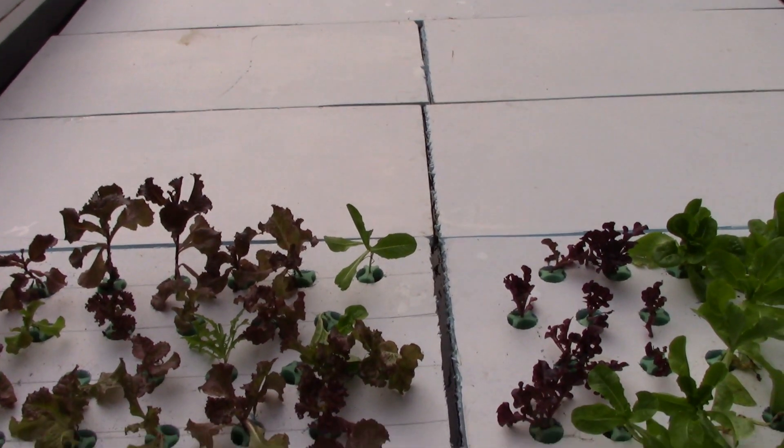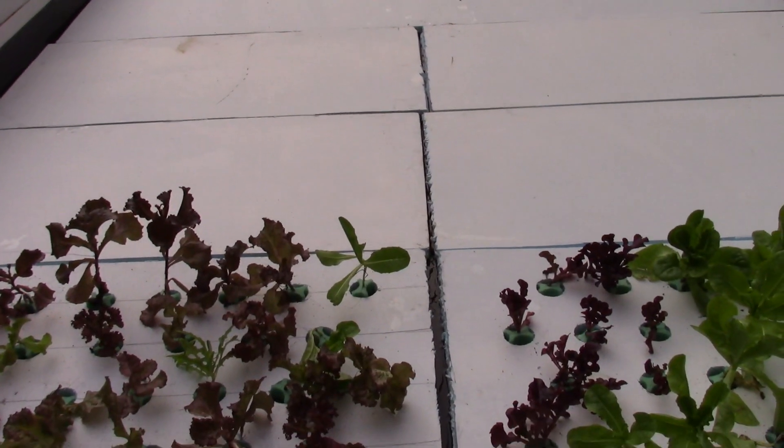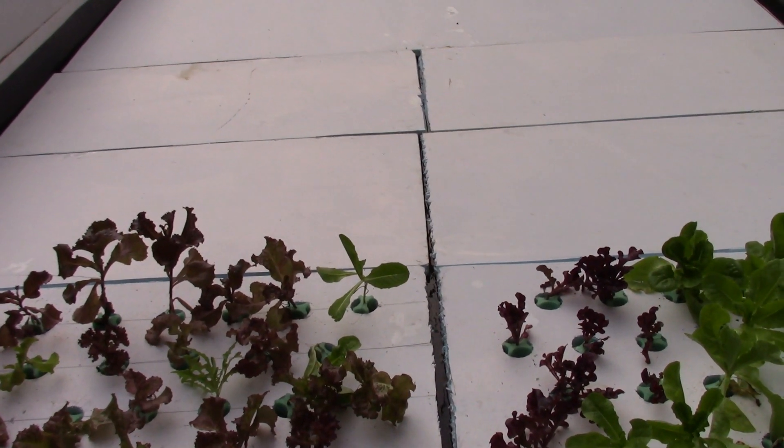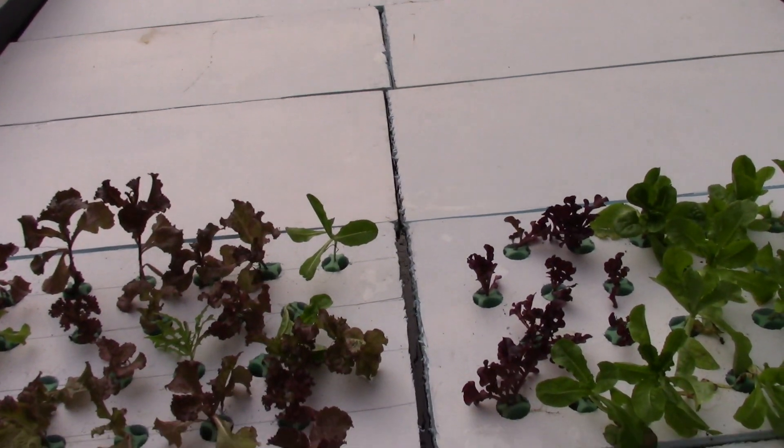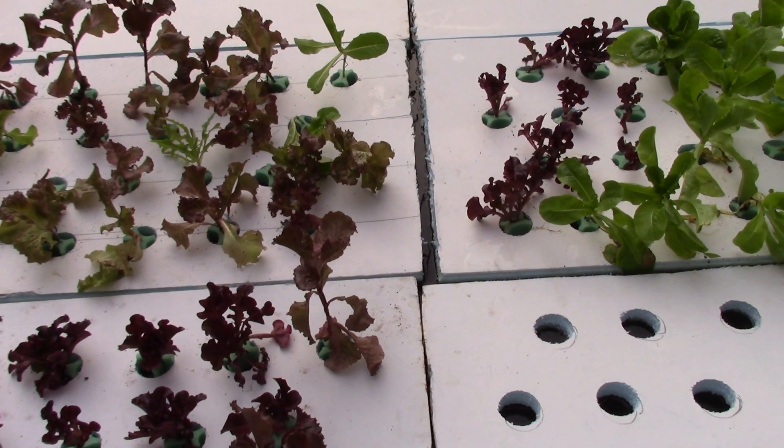In an aquaponics system, you have the fish in those tanks up there. They produce ammonia, and then a bacteria called Nitrosomonas take the ammonia and turn that into nitrite.